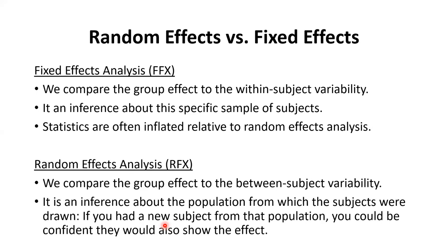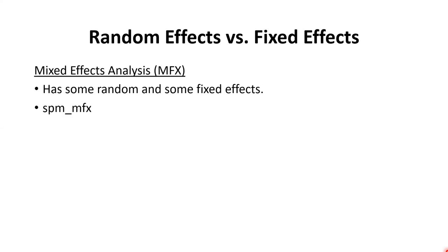In a random effects analysis we do consider the between-subjects variability, so if you were to look at a new subject you'd be relatively confident they'd get a similar effect size. For this reason, random effects analyses are the most common approach in neuroimaging. There's also a third type called mixed effects analysis, where some variables could be fixed effects and others random effects. In neuroimaging you treat the effect size of experimental effects as random effects, but a mixed effects analysis also allows you to include fixed effects such as the size of drifts. If you want to do a mixed effects analysis in SPM, you can use the function SPM_MFX.